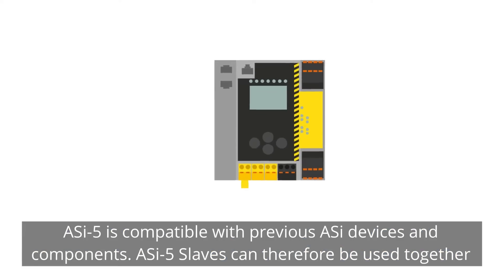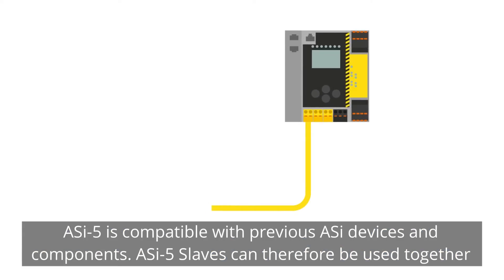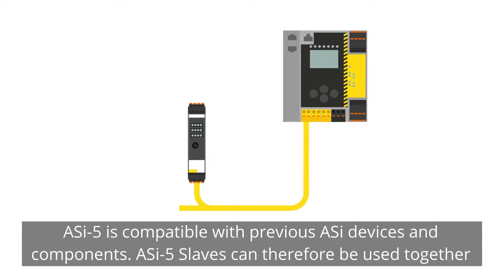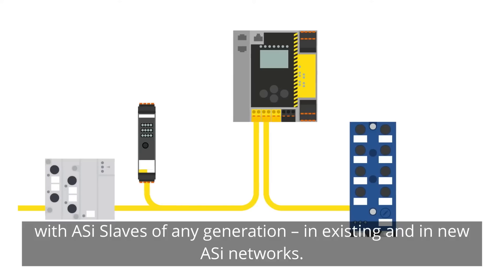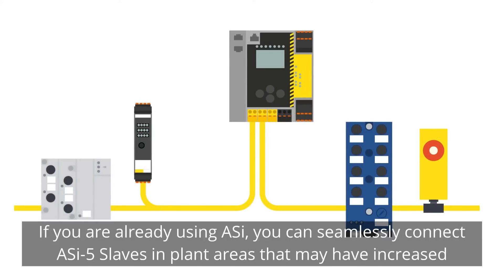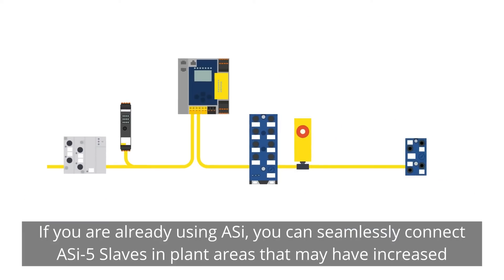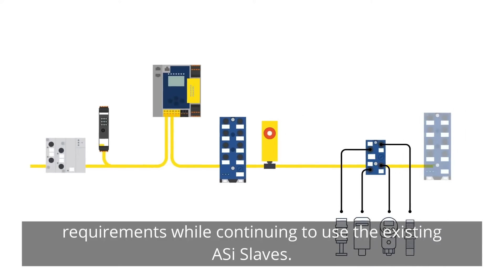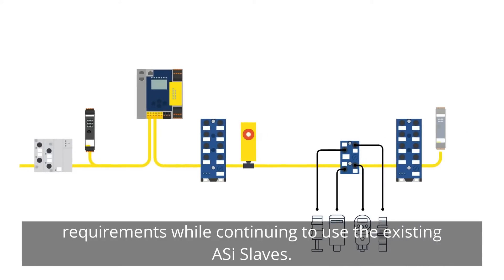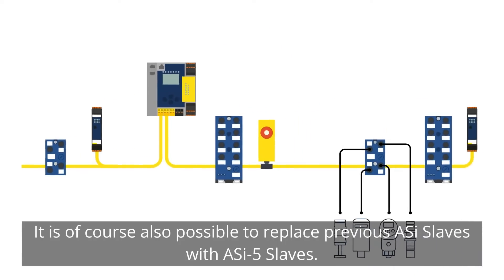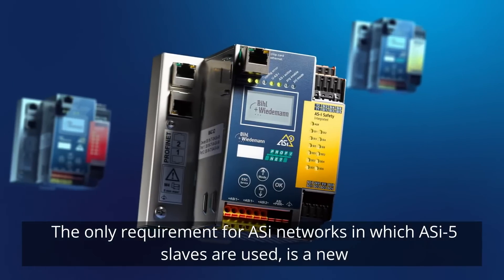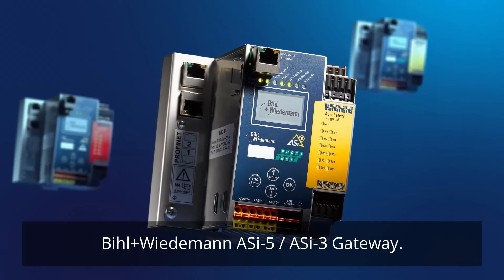OSI 5 is compatible with previous OSI devices and components. OSI 5 slaves can therefore be used together with OSI slaves of any generation in existing and in new OSI networks. If you are already using OSI, you can seamlessly connect OSI 5 slaves in plant areas that may have increased requirements while continuing to use the existing OSI slaves. It is of course also possible to replace previous OSI slaves with OSI 5 slaves. The only requirement for OSI networks in which OSI 5 slaves are used is a new Biel Wiedemann OSI 5/OSI 3 gateway.